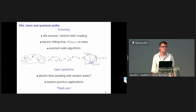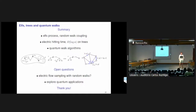Question: You have the example of trees where the electric hitting time is small. Are there known examples where it isn't small — can it be big? Answer: We know it's always at least as good as the classical hitting time, but it can be about the same. One example is a binary tree where all leaves are marked: the classical hitting time is already very good — about the depth of the tree, since you're biased to move downwards — and the electric hitting time can't be any better than the depth of the tree. So they're about the same in that example.